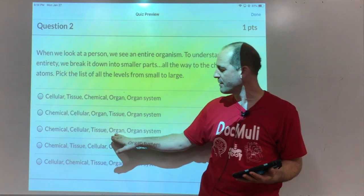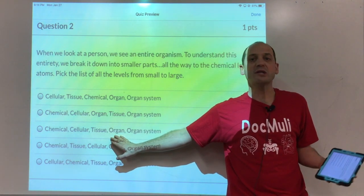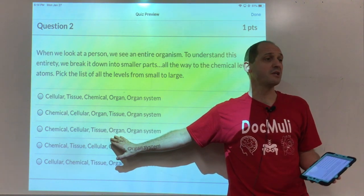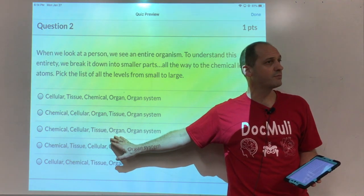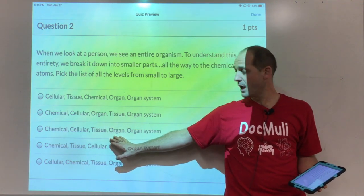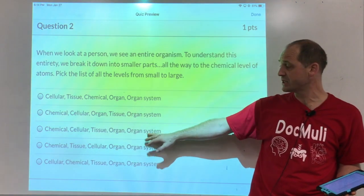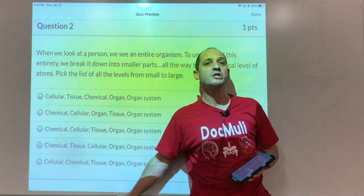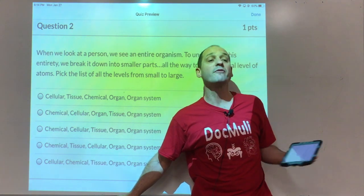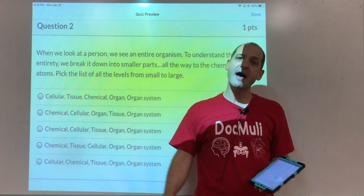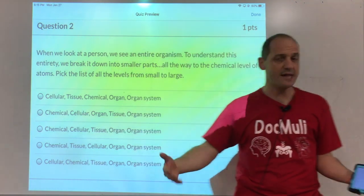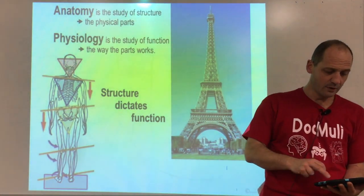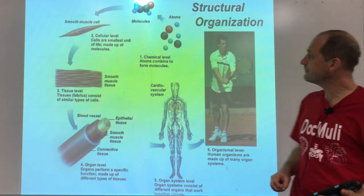A bunch of tissues together make an organ, like the heart — part of the heart is muscle tissue, another part is nerve tissue. Then organs come together to form organ systems, like the heart with its attached blood vessels. The heart alone is an organ; a blood vessel alone is also an organ. All these organ systems together make the organism.